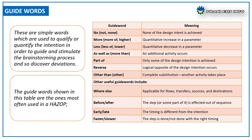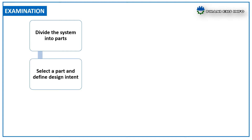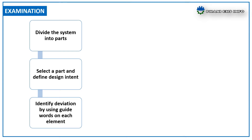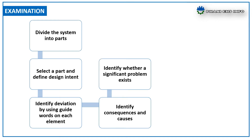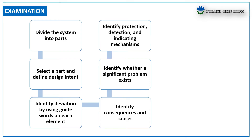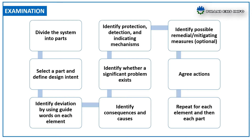WHERE ELSE applies to flows, transfers, sources, and destinations. BEFORE or AFTER means the step is affected out of sequence. EARLY or LATE means the timing is different from the intention. The examination phase includes the following steps: divide the steps into parts, select a part and define design intent, identify deviations using guide words on each element, identify consequences and causes, and identify whether significant problems exist.